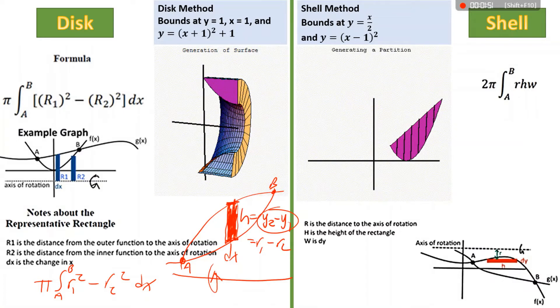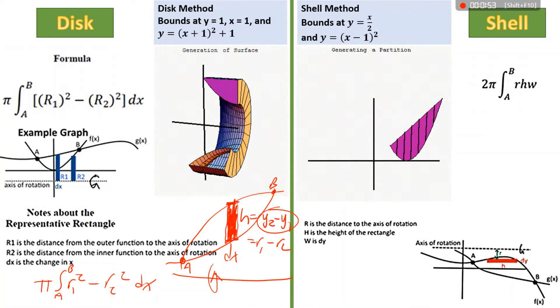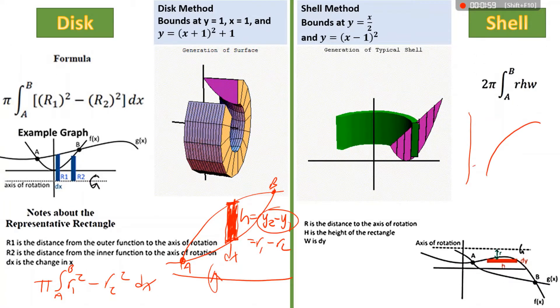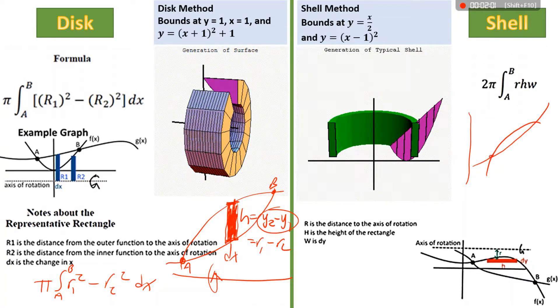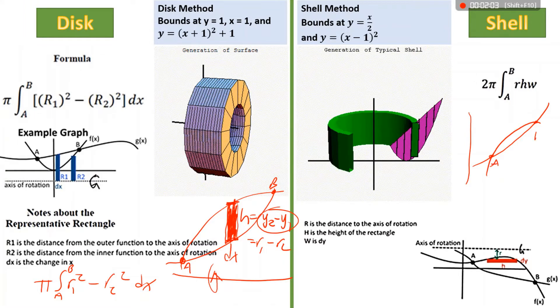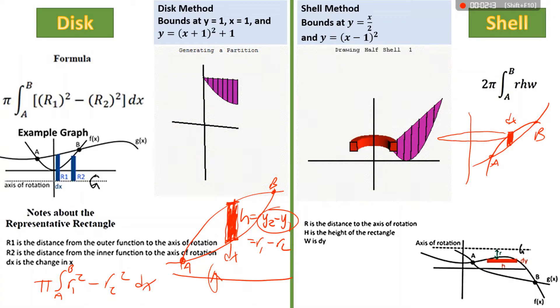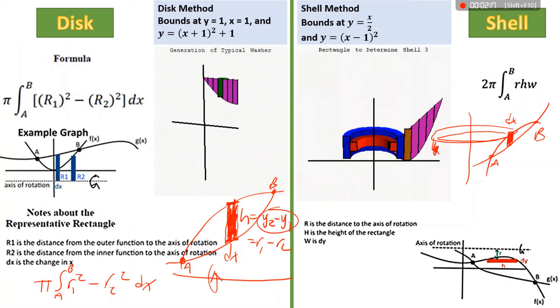For shell method, we're doing almost the same thing, except we're spinning around a vertical line instead. So we've got the same area that we started with last time. We're going to create our box again. That has some width, but then spin that box around our axis of rotation to create a cylinder, so kind of like a toilet paper roll.